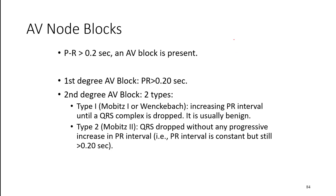Normally, the PR interval is no more than 0.2 seconds, which is five small boxes, or one large thick-line box on the ECG.